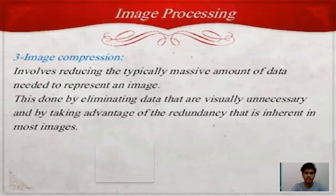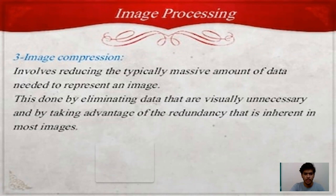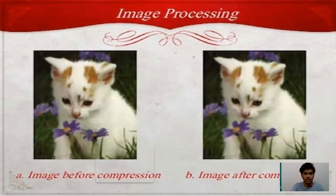The third one is image compression. It involves reducing the typically massive amount of data needed to represent an image. This is done by eliminating data that is visually unnecessary and by taking advantage of the redundancy that is inherent in most images. The first picture is the image before compression and the second is the image after compression.